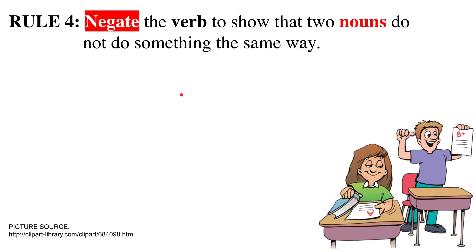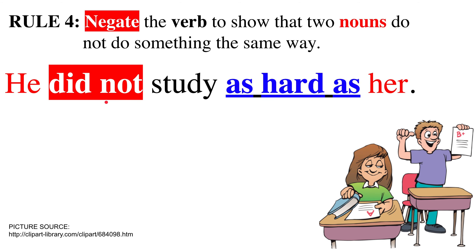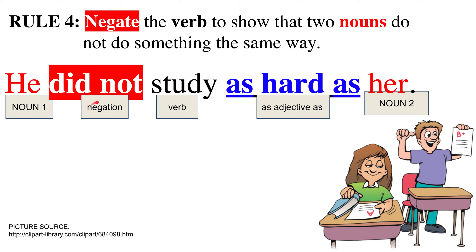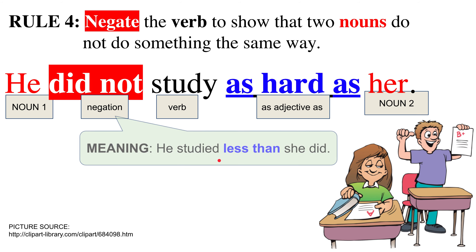Rule four: if I want to negate the verb to show that two nouns do not do something the same way, then I use 'not' and negate the verb — 'did not' or 'do not' — and it comes before the verb. For example, 'He did not study as hard as her.' He has a B plus, but she has an A. Noun one is 'he,' negation is 'did not,' the verb is 'study,' adjective is 'hard,' and noun two is 'her.' The meaning is that he studied less than she did.